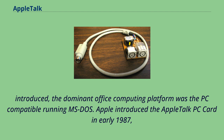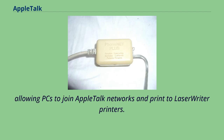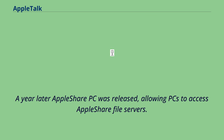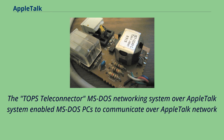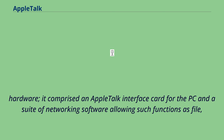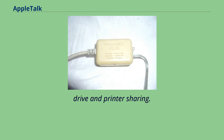The TOPS teleconnector MS-DOS networking system over AppleTalk enabled MS-DOS PCs to communicate over AppleTalk network hardware. It comprised an AppleTalk interface card for the PC and a suite of networking software allowing such functions as file, drive, and printer sharing, as well as allowing communication between PCs and Macs with TOPS software installed. The Mac TOPS software did not match the quality of Apple's own in ease of use or robustness, but the DOS software was relatively simple to use in DOS terms and was robust.